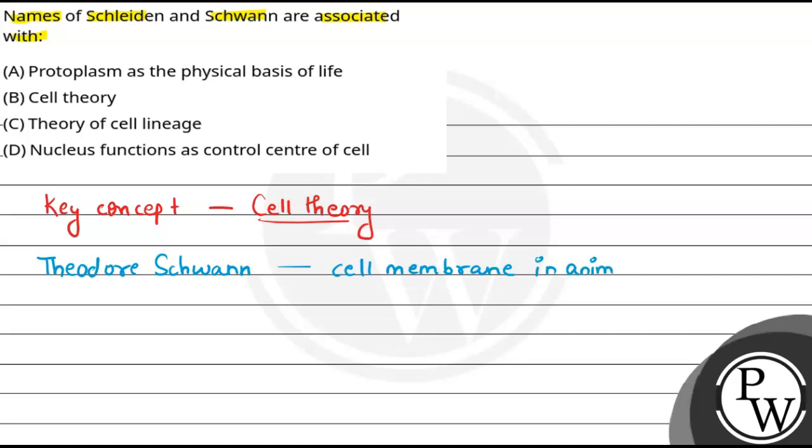If we talk about the other scientist, that was Matthias Schleiden, and they told us that plants are composed of different kinds of cells.